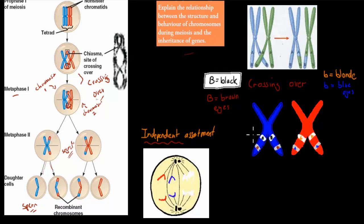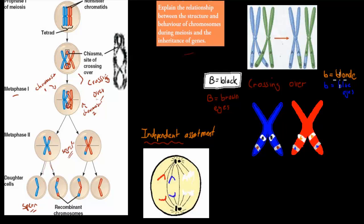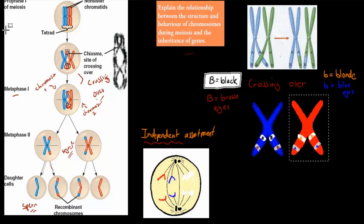Let's go over crossing over with an example. Say you originally had these types of chromosomes: a chromosome with a black hair allele and a brown eye allele, and a duplicated copy. On the other chromosome you had blue eyes and blonde hair — small b for blonde hair and small b for blue eyes. Now you have these two different ones. What happens during metaphase 1 is crossing over, where the chromosomes come closer together and parts of them are swapped.